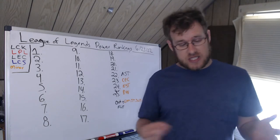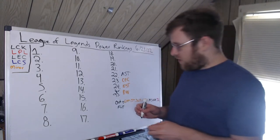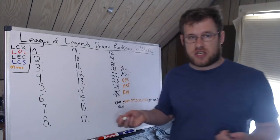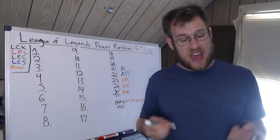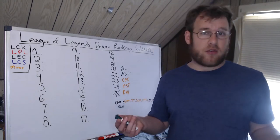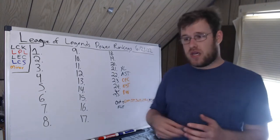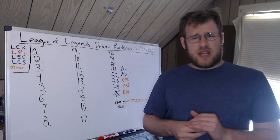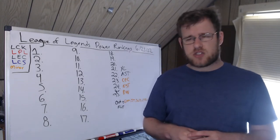Astralis right now I have 22nd. I think they're playing quite well. 21st, we have Excel. Excel's only loss is to G2 as well. Excel did very well against Misfits and Fnatic. A win over Fnatic is massive for a team like Excel.